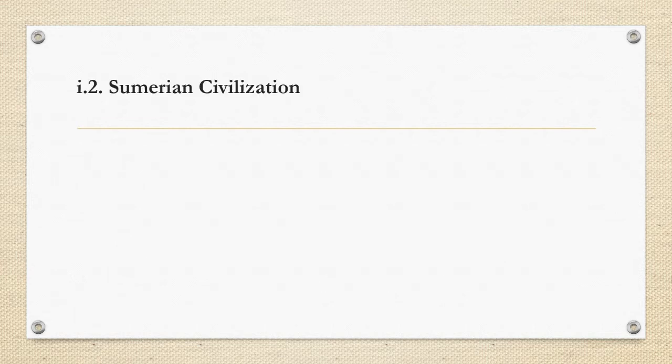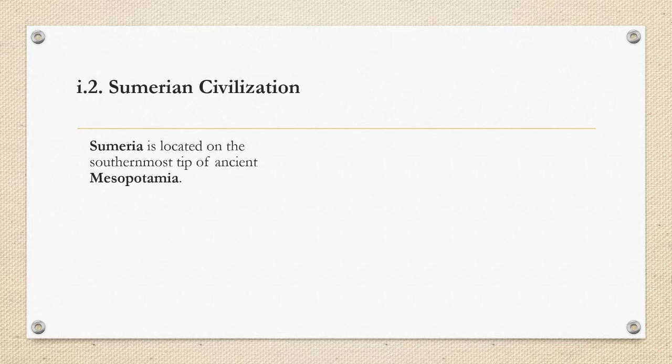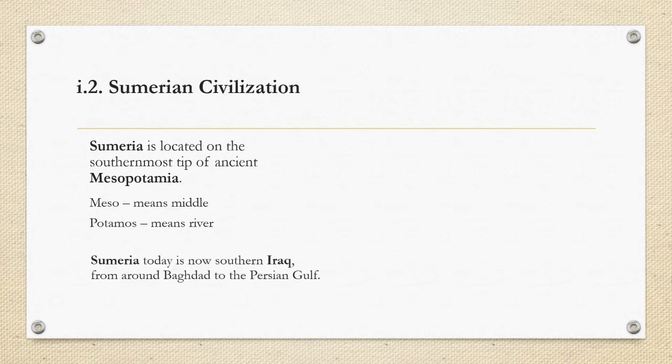Next is the Sumerian civilization. Sumeria is located on the southernmost part of ancient Mesopotamia. The word 'Mesopotamia' comes from two words: 'meso,' meaning middle, and 'potamus,' meaning river. Sumeria today can be found in southern Iraq, from around Baghdad to the Persian Gulf.